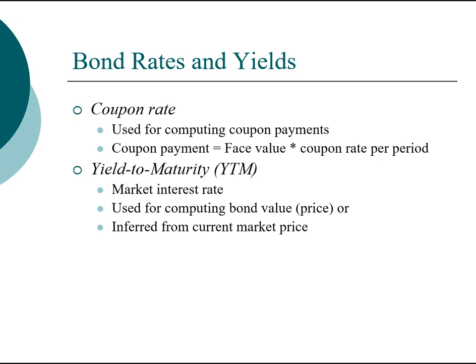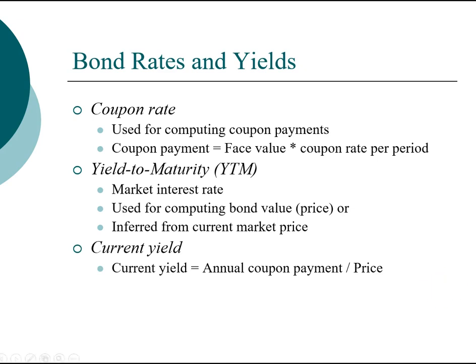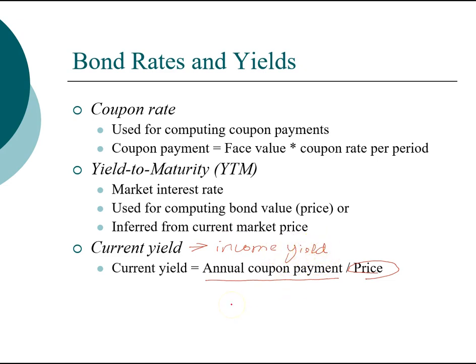There is one last statistic often reported in bond quotations — the current yield. The current yield is not used in any calculation; it serves only as a measure of return. It is based on the annual coupon payment, regardless of payment frequency, divided by the price of the bond. The current yield measures the income yield component of an investment — the recurring income as opposed to the capital gains component.